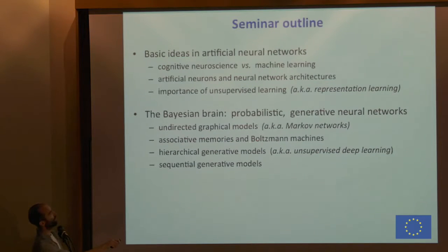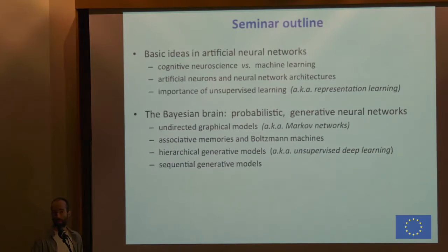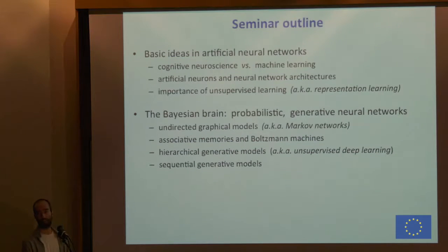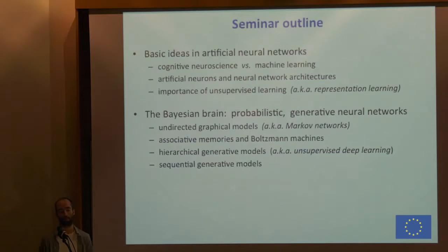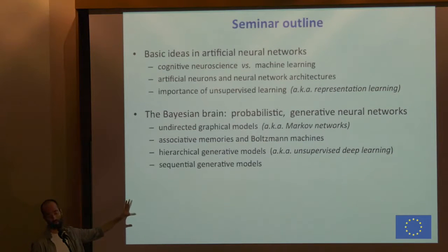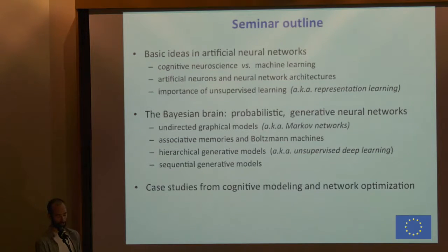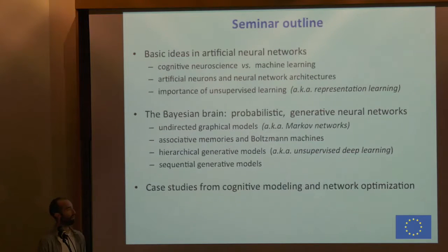I will also talk about some extensions of Boltzmann machines to process sequential information. If some of you have heard about deep learning before, you probably haven't heard about Boltzmann machines and sequential versions of them, because usually everybody studies convolutional neural networks and recurrent neural networks — the most famous models trained using error backpropagation. In this case, the learning algorithm is different and the theoretical framework is also a bit different.